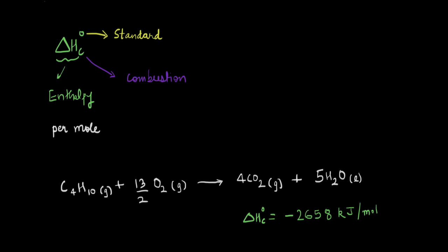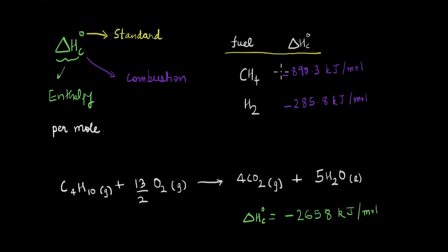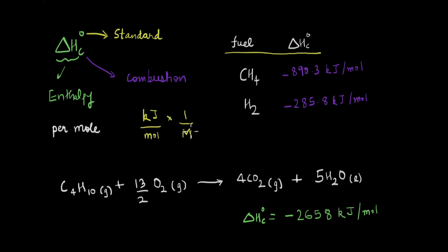If we have data for standard enthalpies of combustion of different substances, one very useful thing we can find out is how to compare different fuels. For example, looking at methane and hydrogen — what I want to find out is, for the same amount, say 1 gram of each, which releases higher energy on combustion? For the same amount of fuel, the one that releases more energy is a better fuel. Since these values are in kilojoules per mole, if I divide by molar mass M (in grams per mole), I convert the units to kilojoules per gram and can compare the two fuels.